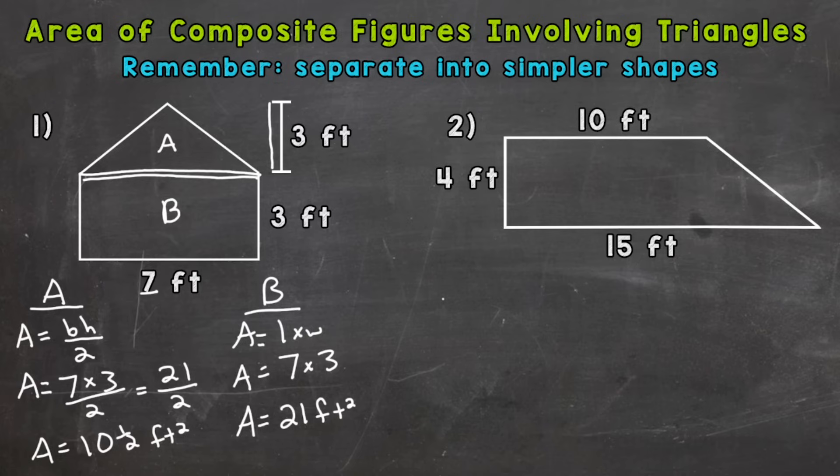Now that we have the area of A and B, we need to add those together for the total area of the composite figure. Area is going to equal 10 and a half square feet plus 21 square feet. Let's add those together. 10 and a half plus 21 is going to give us 31 and a half square feet. That's the total area for number 1.